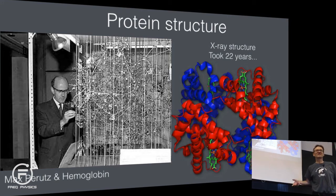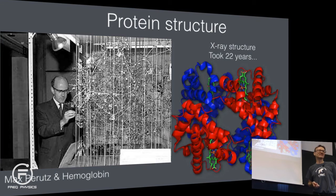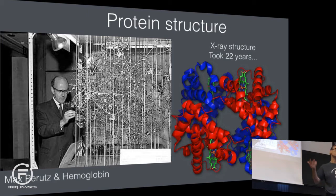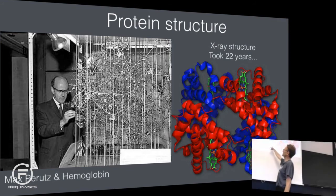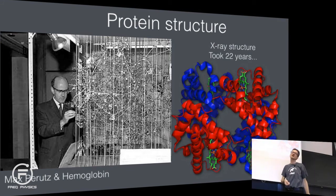It took Max Perutz 22 years to determine the structure of hemoglobin. In hindsight, it was worth it. Can you imagine starting a project now that you'd finish when you were my age, not sure it's going to work? Today it's simple because thousands of people have determined structures. But being the first one — that is what real science is about. And we were so horribly spoiled with computers; they were sitting with rulers, measuring the distances between every single atom and building models up manually.